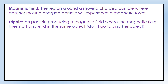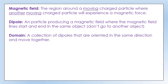Next we have something called a dipole. At the particle level, a moving charged particle produces a magnetic field where the field lines start and end at the same object — so for an electron the field line comes out of the electron and goes back into it. We don't talk about dipoles much at this stage; instead we look at domains. A domain is a collection of dipoles all oriented in the same direction, similar to how we talk about coulombs as a large number of electrons moving together.